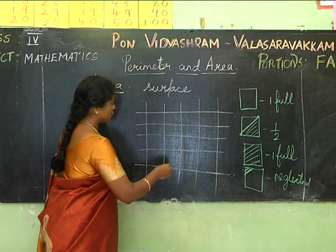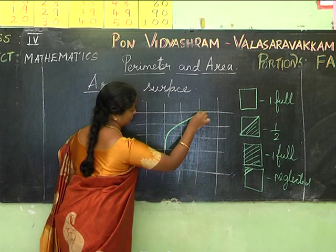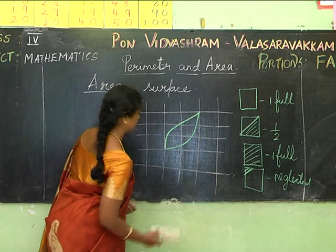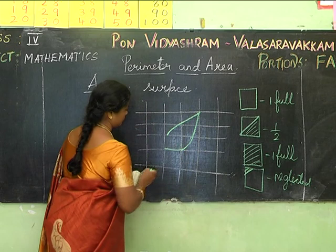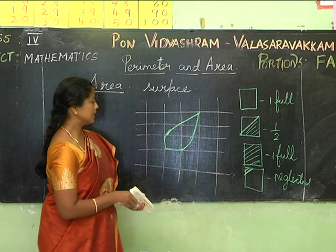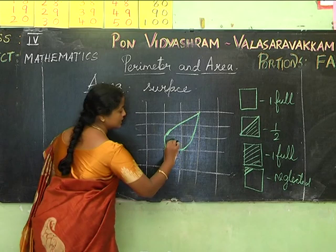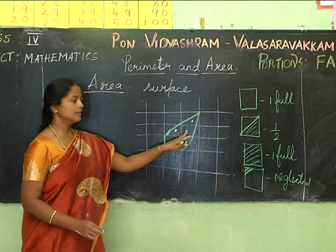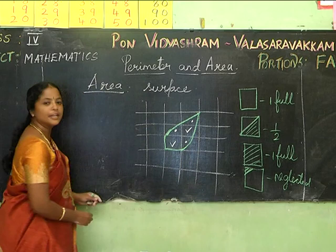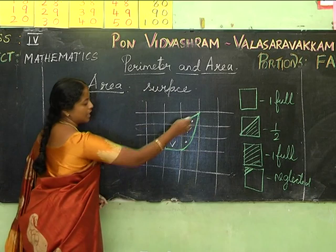Let me draw a figure and show you. This one can be taken as 1 full square; these 2 can be taken as half squares; this one is also a half square; and this one is three-quarters so it counts as a full square. So the total area of this leaf is 2 full squares + ½ + ½ + full = 3½ square centimeters.